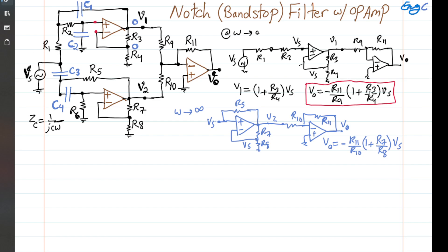The message is that the gain of the amplifier at super high and super low frequencies is now defined. At both super high and super low frequencies, Vs is passed to the output with a gain. In the middle frequencies — that's why we call it band-stop or notch — we encounter crossing frequencies matching the poles created by C1, C2, R1, R2, and C3, C4, R5, R6, along with contributions from R3, R4, R7, R8. Those poles or zeros kill the signal, resulting in the notch or band-stop behavior between output and input.